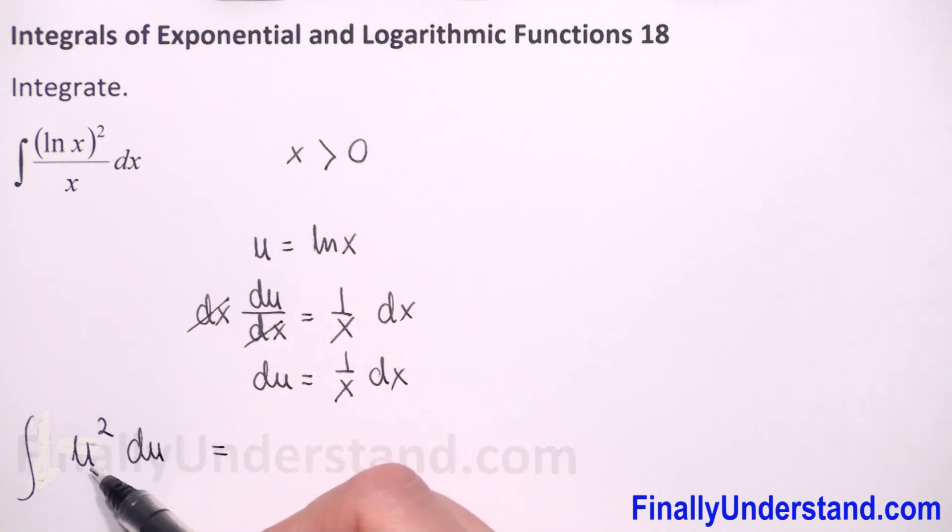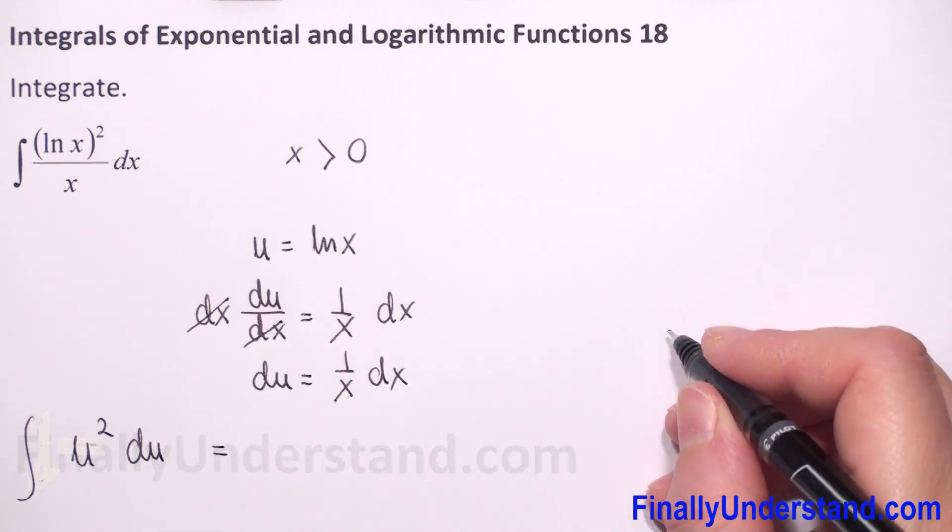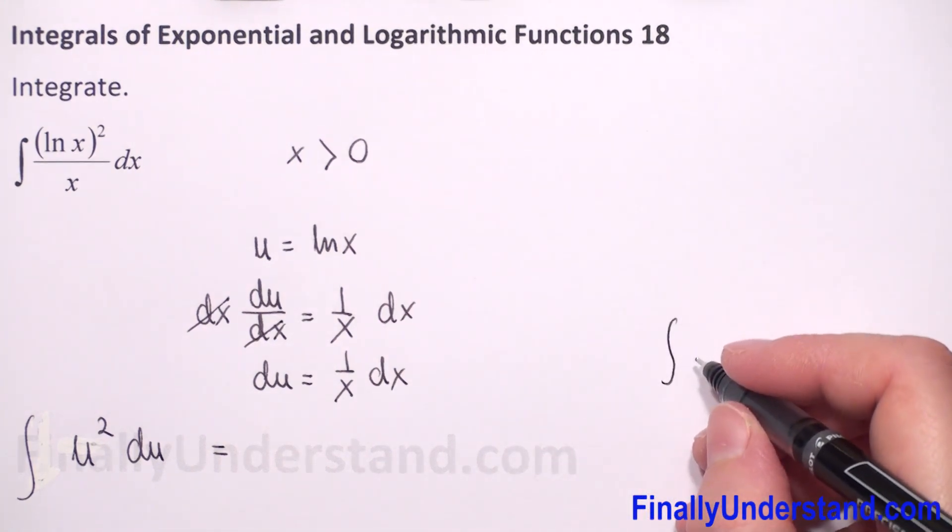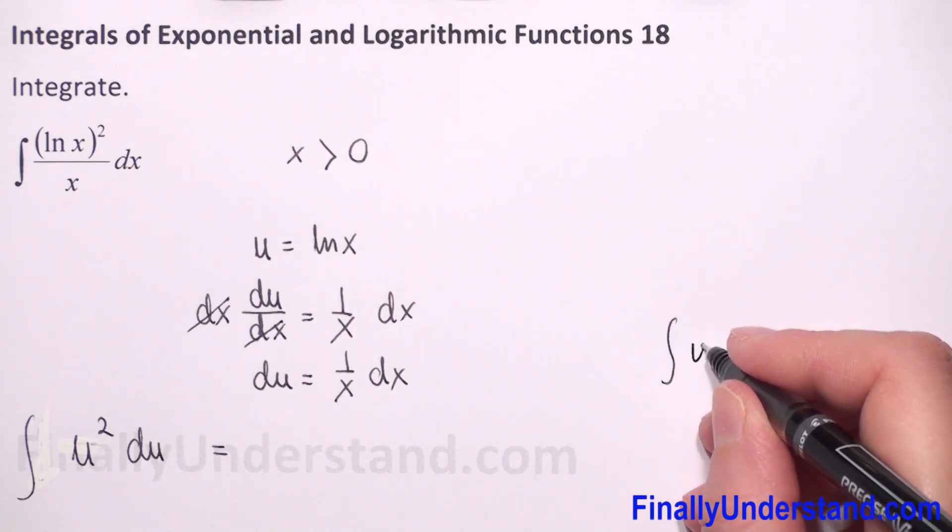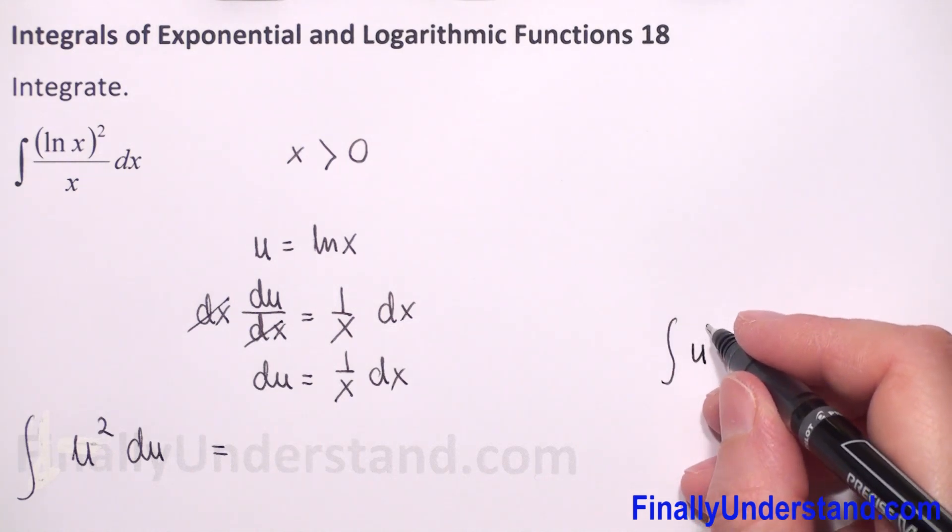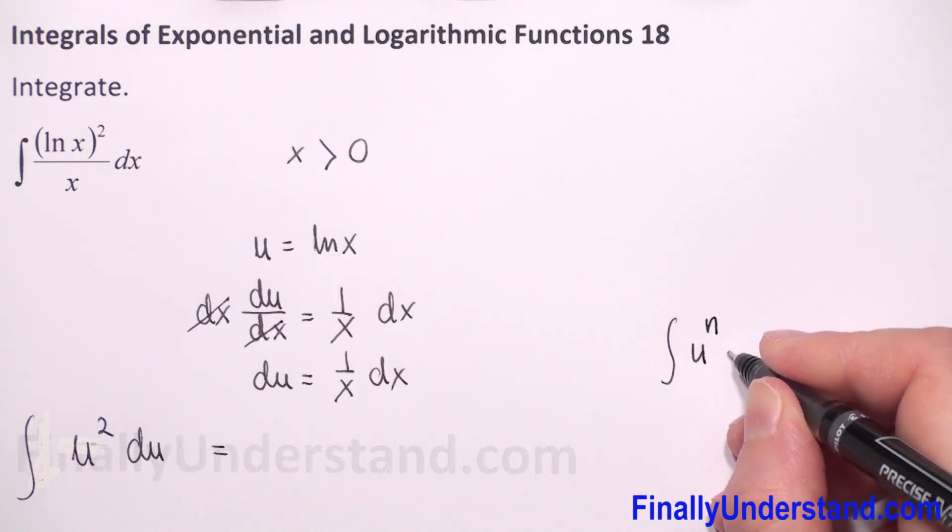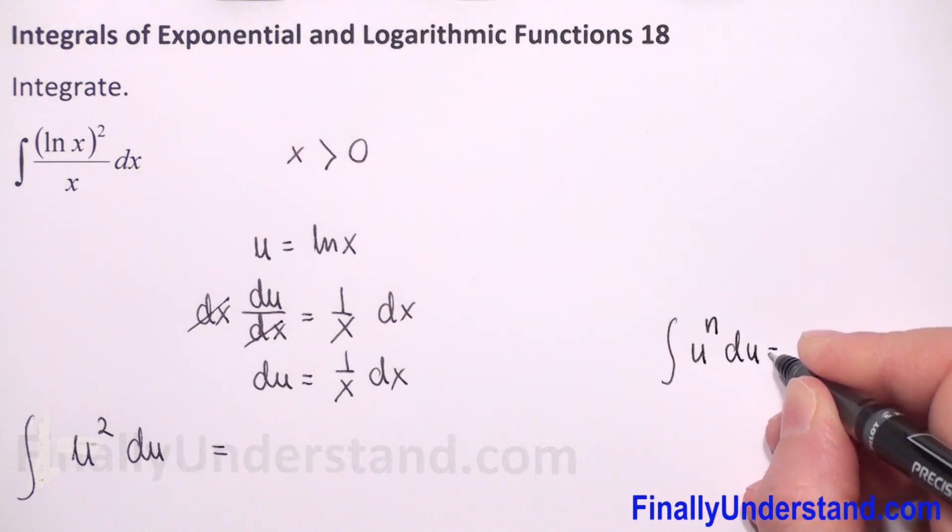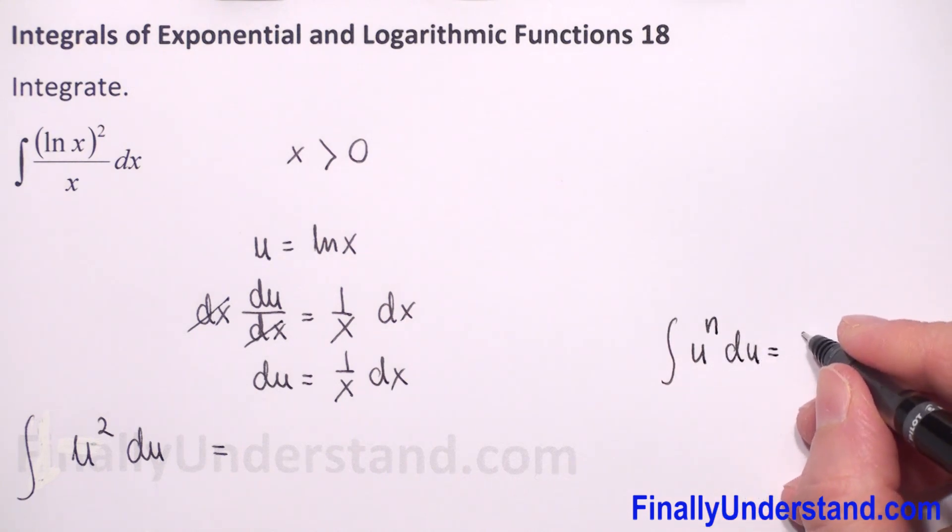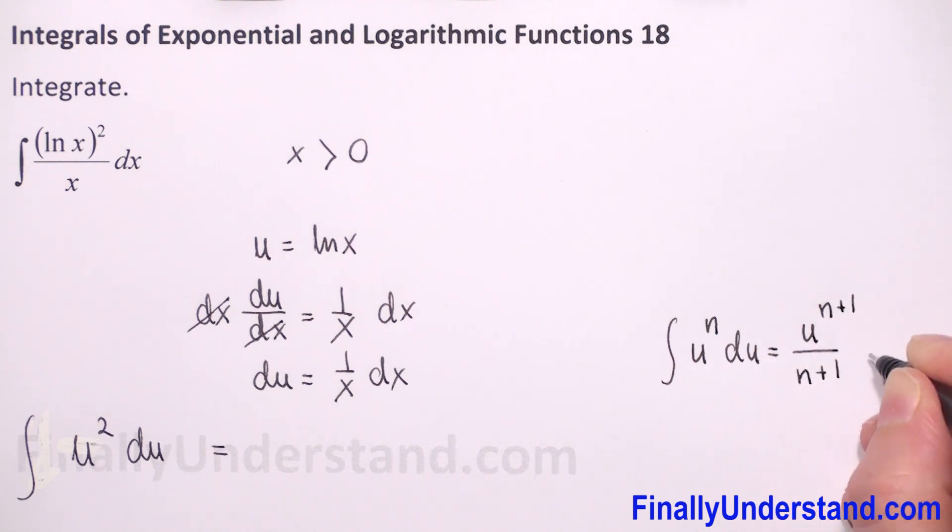Now we have to find the indefinite integral of a power function. So it means we have to use the formula when we have u... the indefinite integral of u to power n with respect to u, which is equal to: In the numerator we have u to power n plus 1, and in the denominator we have n plus 1, plus of course a constant number.